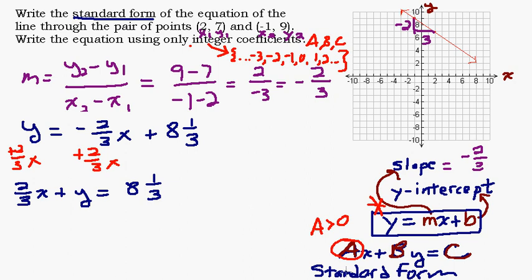So now we have 2/3x + y = 8 and 1/3. We're doing great. We have pretty close to this standard form. We've got an Ax + By = C. That looks good. Our only thing now is we have to have integers. We need to get rid of these fractions. I'm going to erase this 8 and 1/3 right here, and I'm going to write that as an improper fraction.